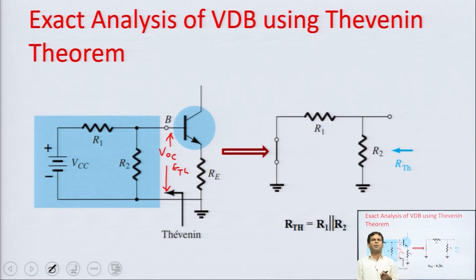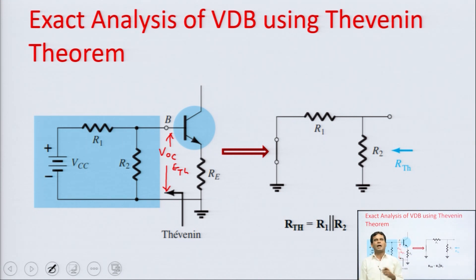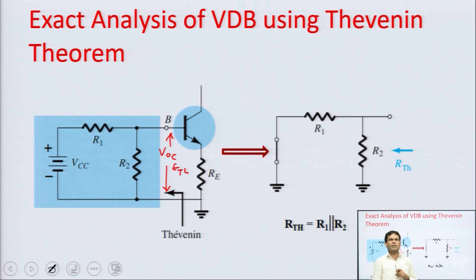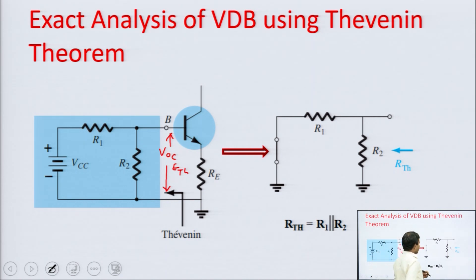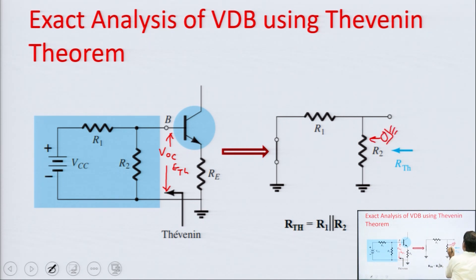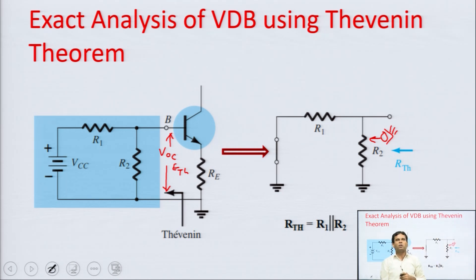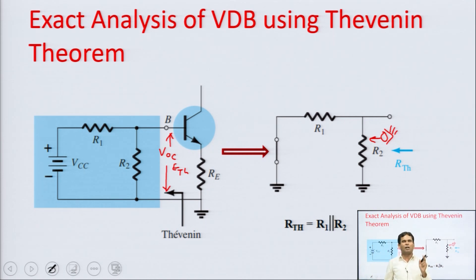To calculate the Thevenin equivalent resistance, all voltage sources are replaced by their internal resistance zero, because we assume ideal sources. Looking from the two terminals, we can see that RTH is nothing but R1 parallel R2, that is R1 into R2 upon R1 plus R2.